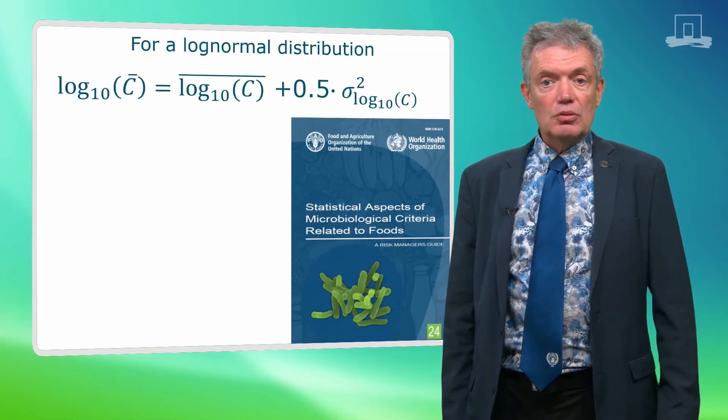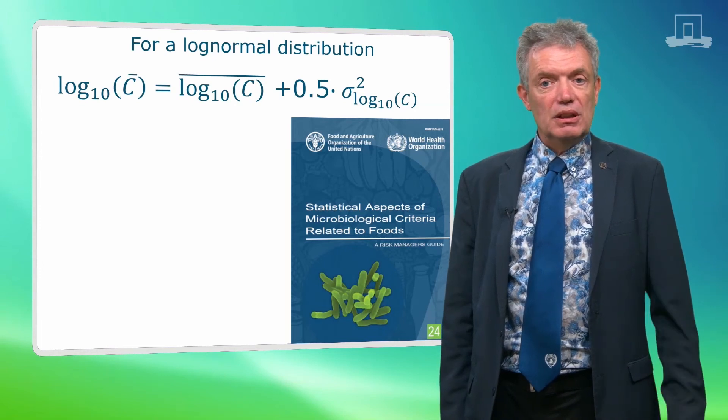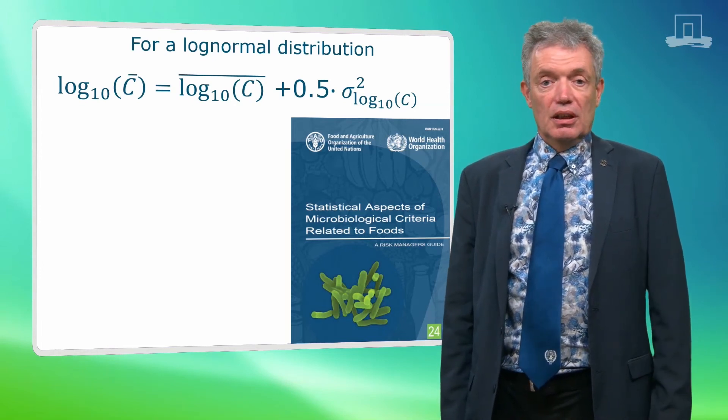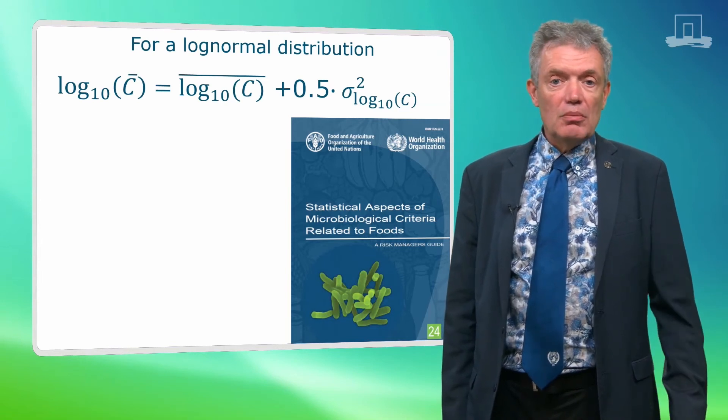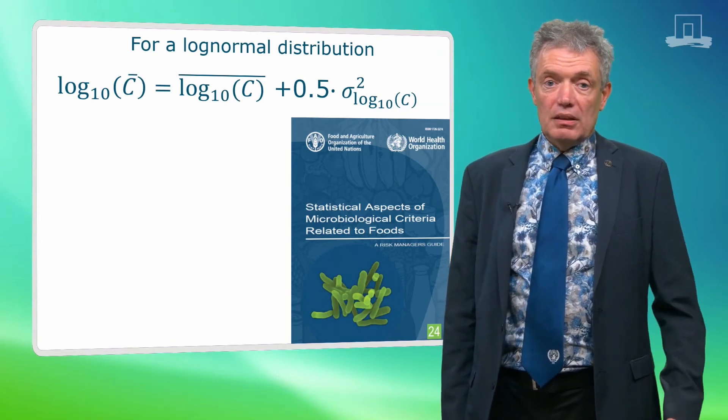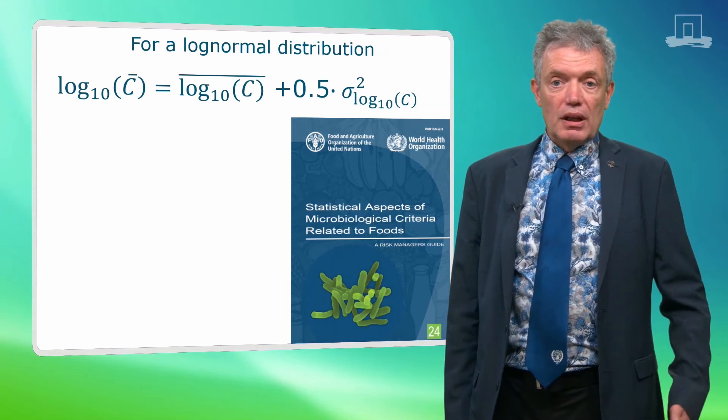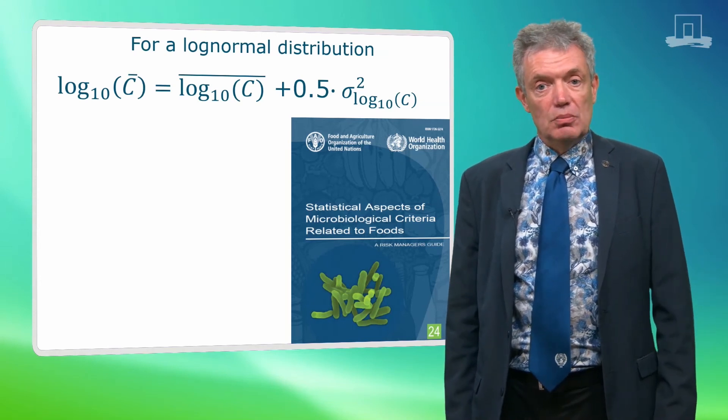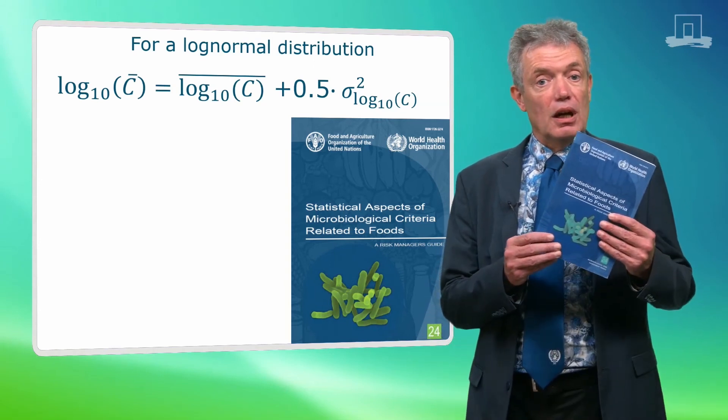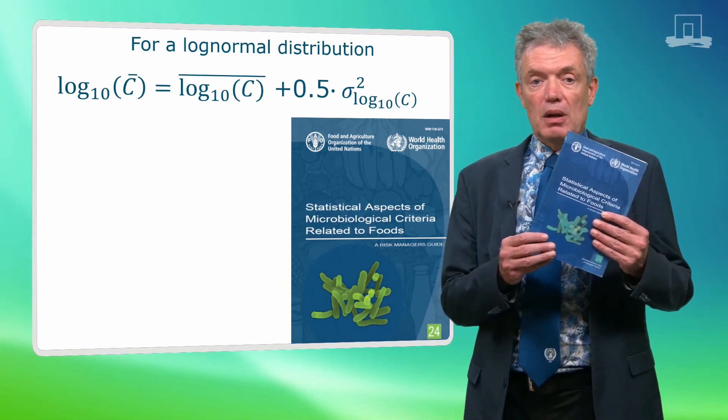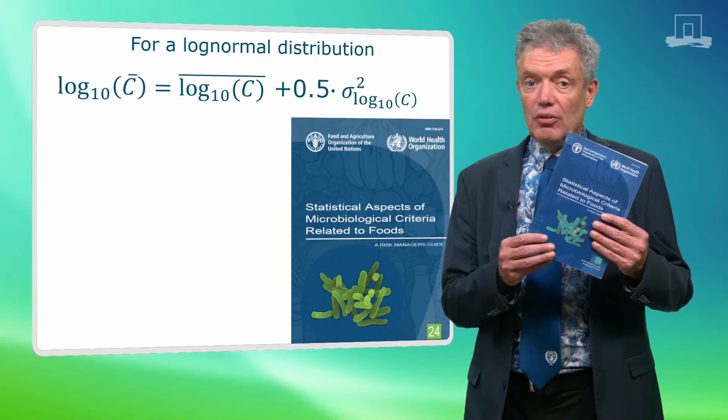The arithmetic mean can also be calculated from the geometric mean with the equation presented here. If the standard deviation is zero, so when there is no variation, they are both equal. But the bigger the standard deviation, the more the arithmetic mean is larger than the geometric mean. You can also look up the FAO-WHO guideline on statistical aspects of microbiological criteria for further information.